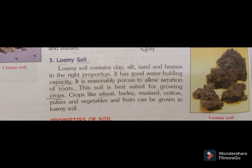The next soil is loamy soil. Loamy soil contains clay, silt, sand, and humus in the right proportion. It has good water-holding capacity and pores are also present, which allow air to circulate to the roots. This soil is best suited for growing crops. Wheat, barley, mustard, cotton, pulses, vegetables, and fruits can be grown in loamy soil. This was the topic of types of soil. I hope by watching this video both topics are clear to all of you. Thank you and have a nice day.